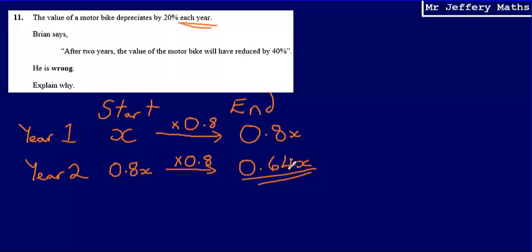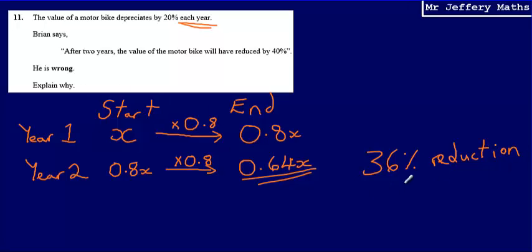What does that represent as a reduction of the original amount? Well, if it is 0.64X, we can say that is a 36% reduction in the price. So why is Brian wrong? He is wrong because rather than it being a 40% reduction, it's going to be a 36% reduction. We can see that from the amount at the end of year two — 0.64X — which we can think of as being 64% of what we started with. And 64% of what we started with equates to a 36% reduction.